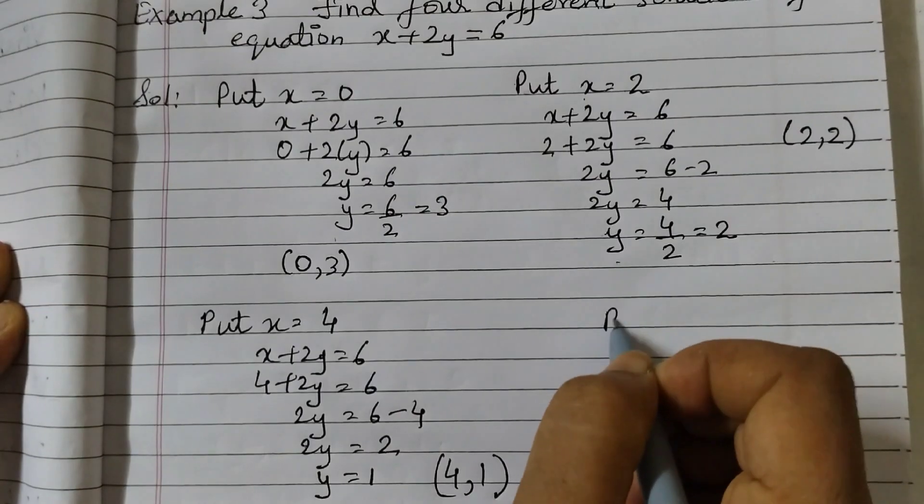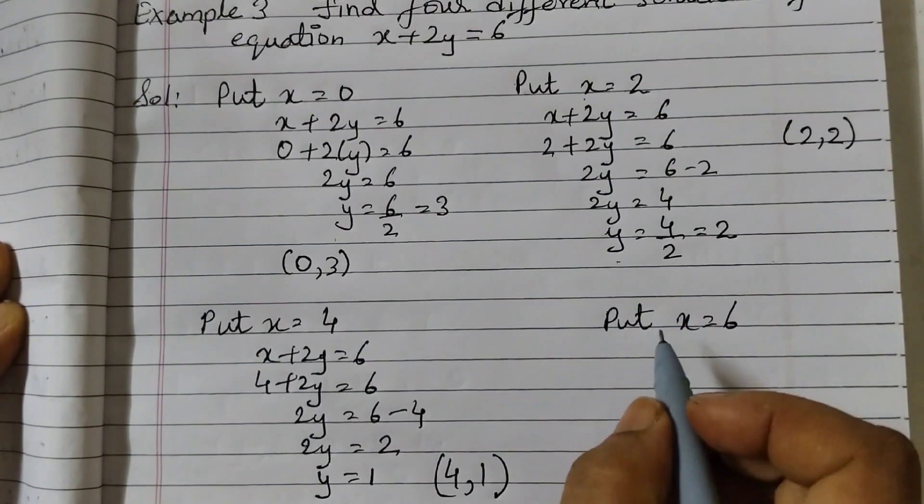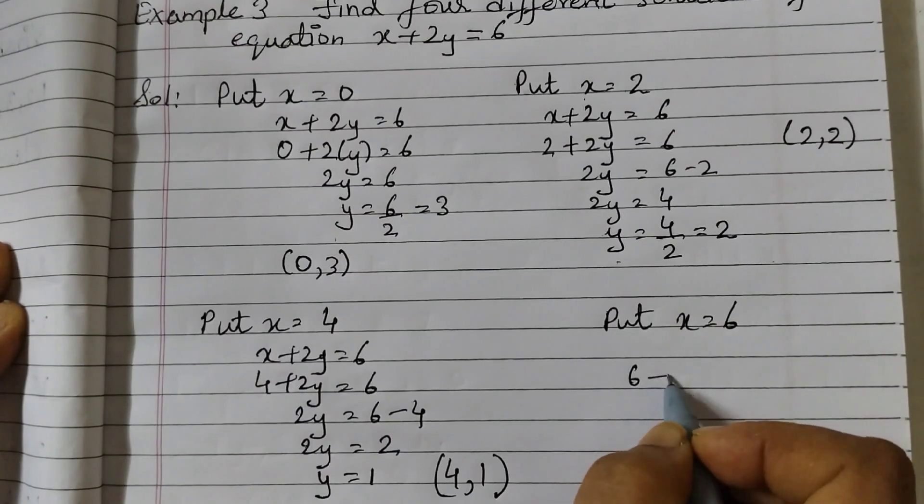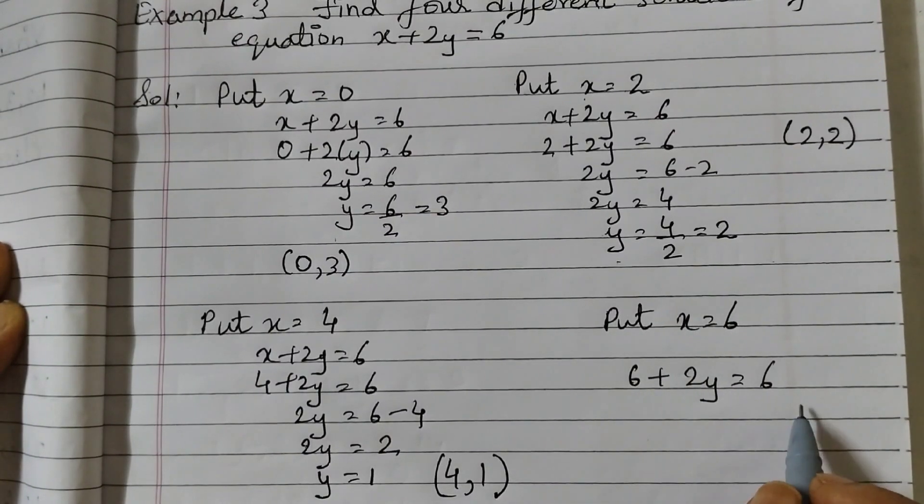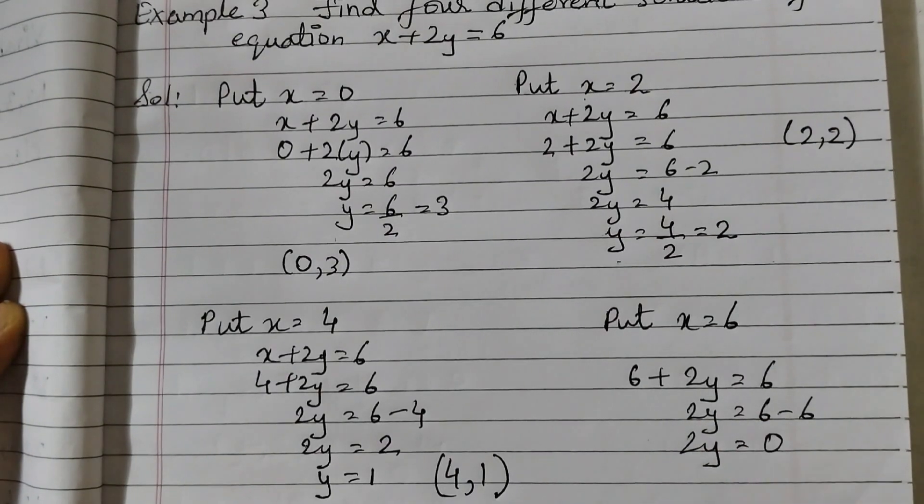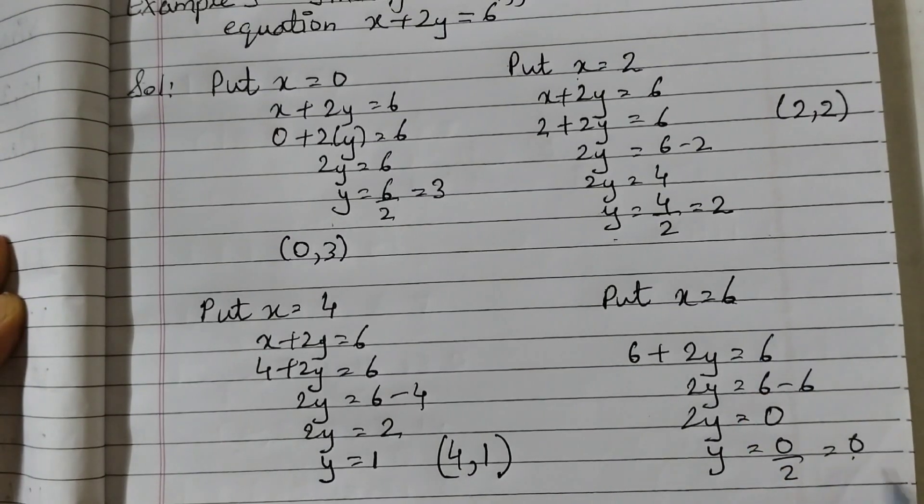And the last one, we will put x as 6. So then 6 plus 2y is equal to 6, take 6 to the other side, 2y is equal to 6 minus 6, 2y is equal to 0, divide by 2, 0 divided by 2 is 0. So here the solution is 6 comma 0.